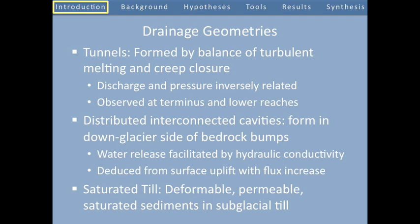That is, in dye experiments, if a discharge of dye input upglacier emerges from the terminus as a dispersed and diffused dye emerging from several tunnels, that typically indicates that at least upglacier at some point a distributed system exists. In addition, subglacial cavitation, which is a symptom of a distributed system, is implicitly observed when water filling these subglacial cavities tends to raise the surface of the ice up.